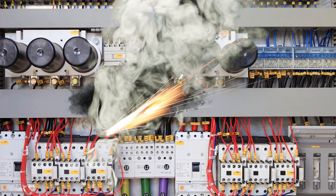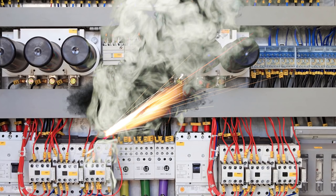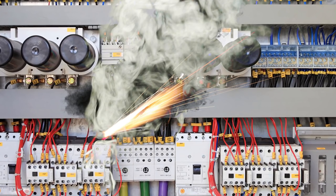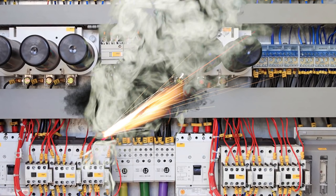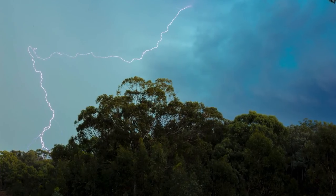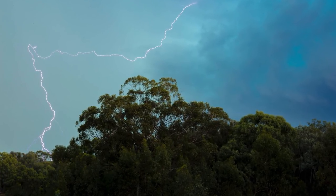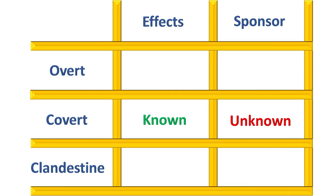The enemy inspects the signal repeater and identifies that there is a melted circuit and a small fire. There were no signs of tampering, so they conclude that it was a lightning strike. The effects are known — the signal repeater doesn't work — but the sponsor is unknown. They think it was a lightning strike.